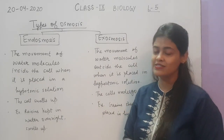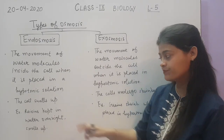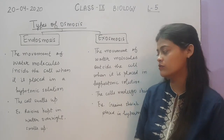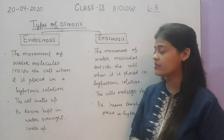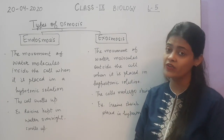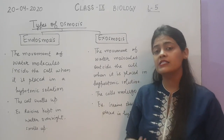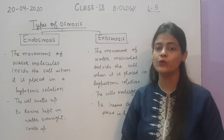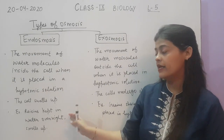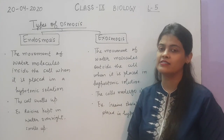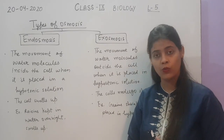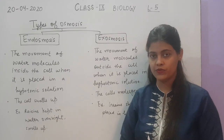When water moves inside the cell, the cell will undergo swelling. For example, a very general example you can see at home — sometimes you keep raisins soaked in water overnight. In the morning the raisins will have swelled up. Why? Due to endosmosis. When we keep raisins in normal water, the water acts as a hypotonic solution for the raisins because water concentration inside the raisins is low. So it undergoes endosmosis and the raisins swell up.